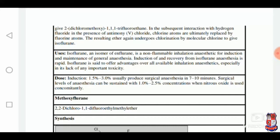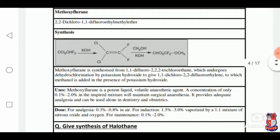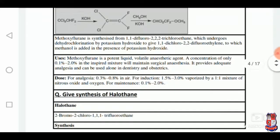Methoxyflurane: it is synthesized from the starting material 1,1-difluoro-2,2,2-trichloroethane. It is a potent liquid volatile anaesthetic agent. A concentration of only 0.1% to 2% is enough to produce induction.